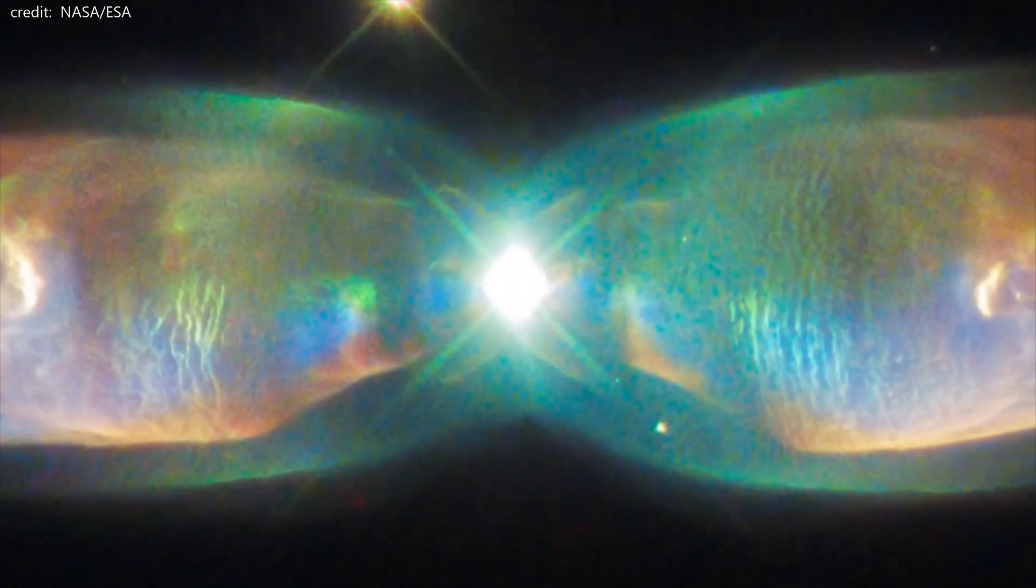Astronomers have dubbed this object as the Twin Jet Nebula because of the jets which are believed to cause the shape of the lobes. Its form also resembles the wings of a butterfly.